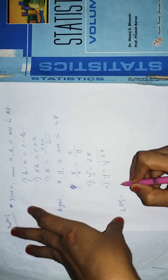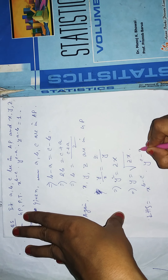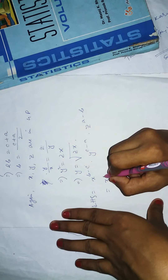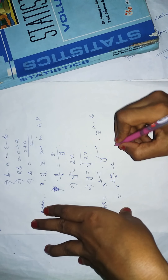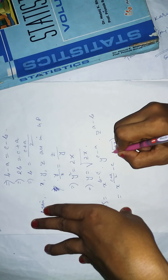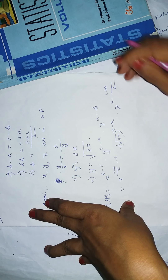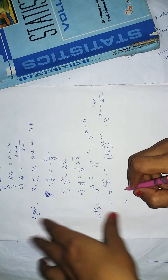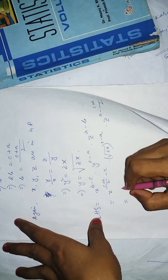Now take the left hand side: x^(b-c) · y^(c-a) · z^(a-b). In place of b, write (c+a)/2. So b = (c+a)/2. And in place of y, write √(zx). We need to change b in terms of a and c, and y in terms of x and z.